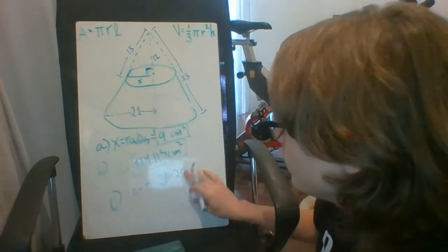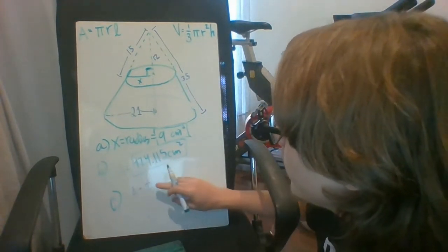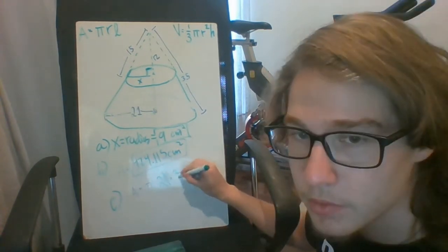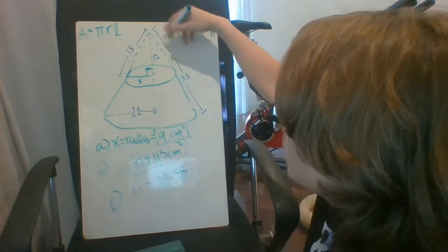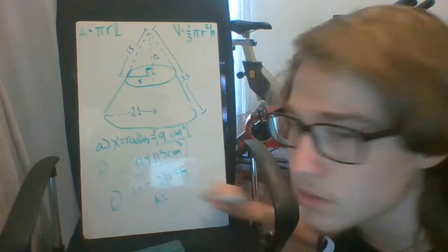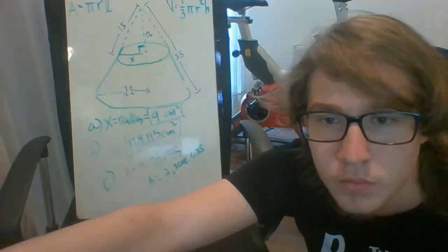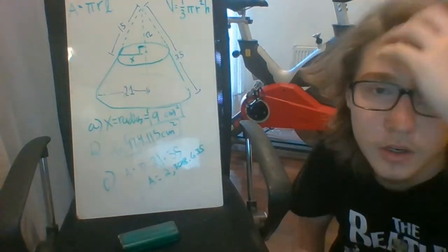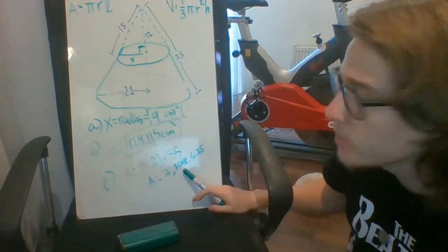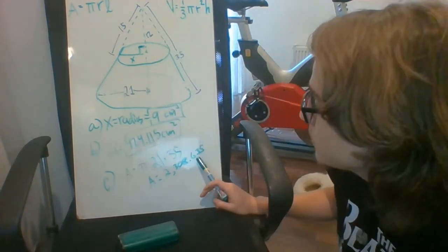So calculating for the whole cone, we're going to have π times R, which is 21, times L, which is 35. The slant height of the whole cone and the radius of it as well. And this is going to give us, the curved surface area of the whole cone is going to be 2308.635.